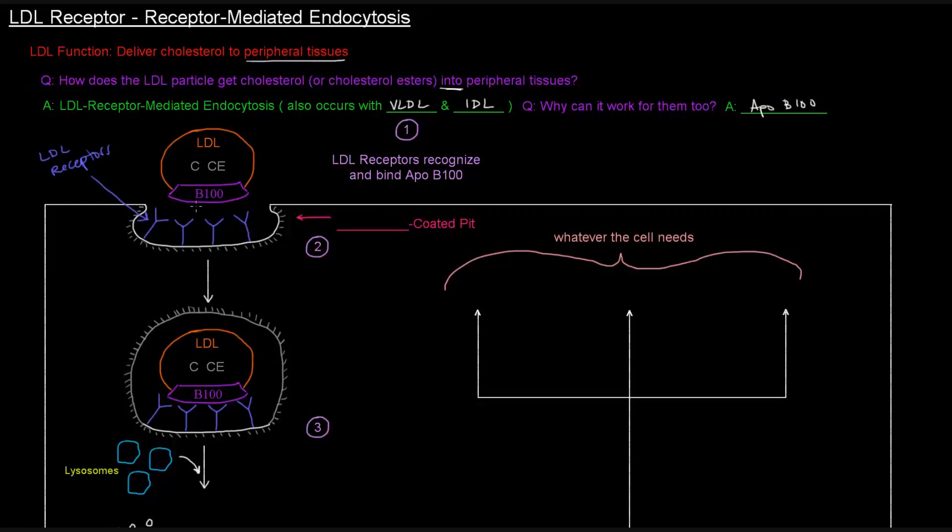They are going to recognize and bind that APOB100. What's going to follow is the invagination to form the endocytotic vesicle. In this pit here, we have this little protein that coats the pit, and that's clathrin. So we have these clathrin-coated pits.